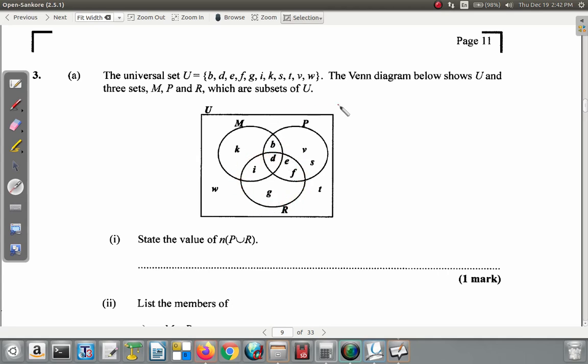These sets M, P, and R are subsets of U, which means each of them are sets within the universal set.